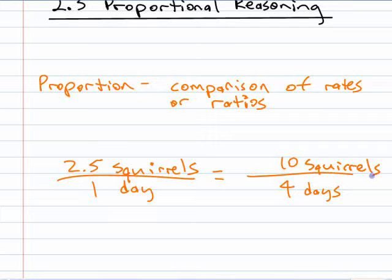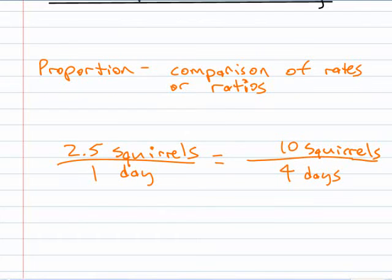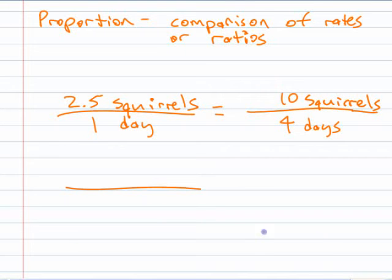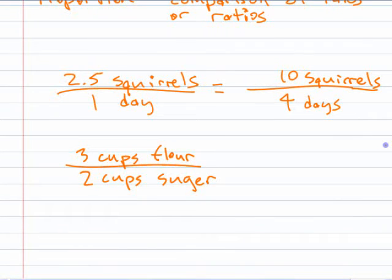You use this all the time, right? You're going to make a batch of cookies or something, and you know that the ratio of, I don't know, if the recipe says that you have three cups of flour and two cups of sugar.